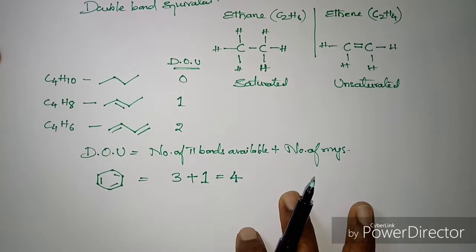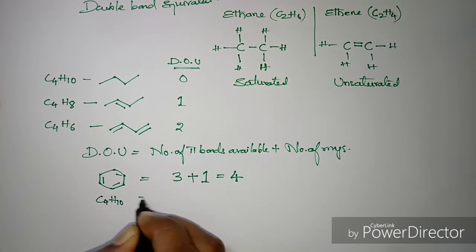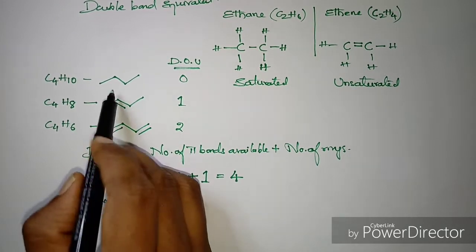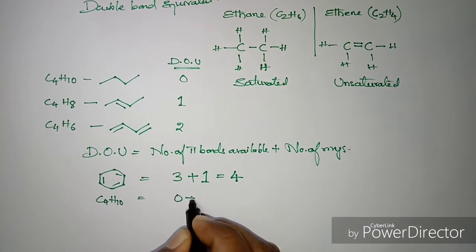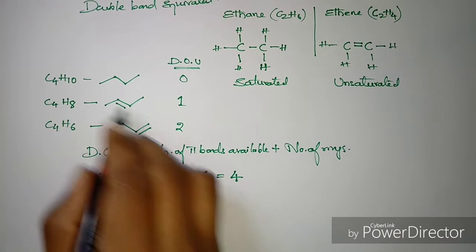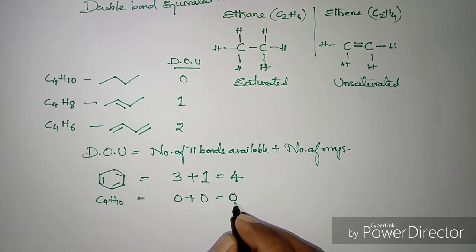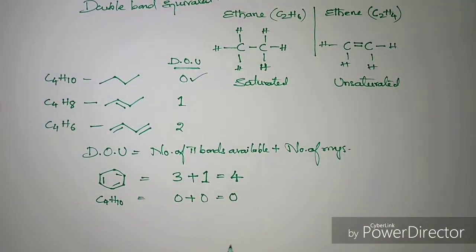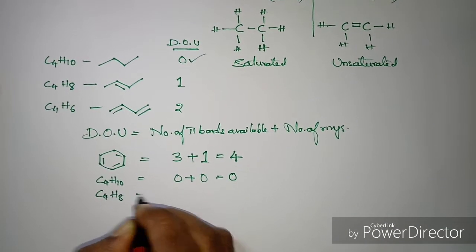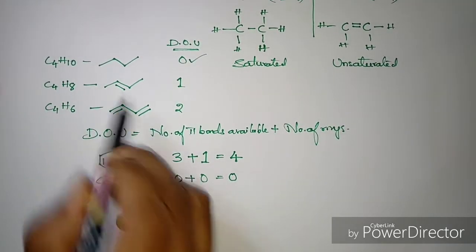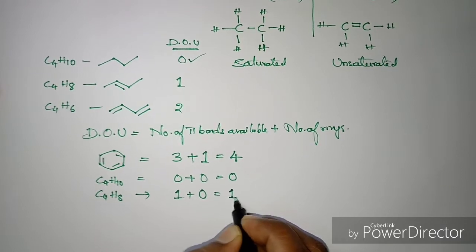Now let's cross-check with the above examples. For C4H10, how many pi bonds are available? Looking at the structure — any pi bonds? No, zero. Any rings? No rings. So its degree of unsaturation value is zero. Similarly for C4H8, how many pi bonds are available? One. Any rings? No rings, so zero. That equals to one.